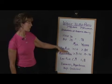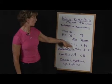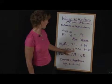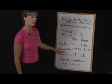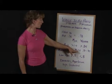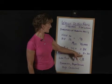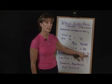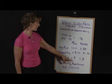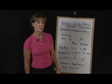High risk is men greater than 1.0, women greater than 0.85. You're at a moderate risk if you're a male at 0.9 to 1.0, and for a woman, 0.8 to 0.85. Low risk for men is lower than 0.9, and lower than 0.8 for a woman.